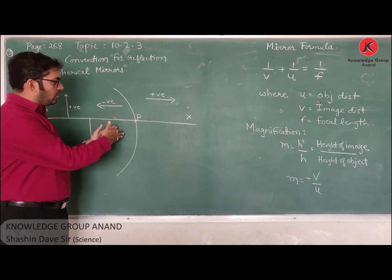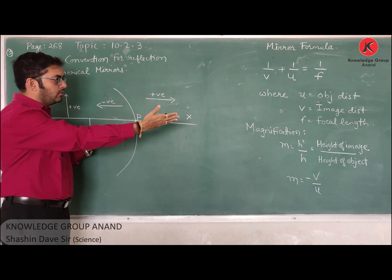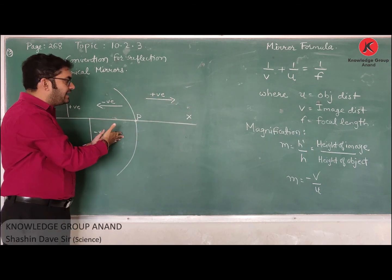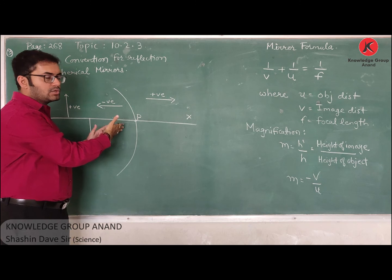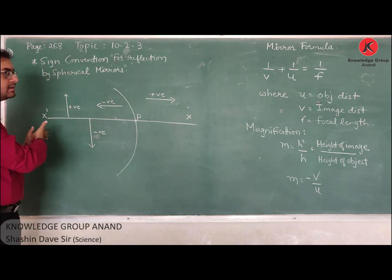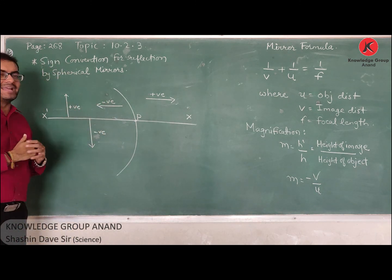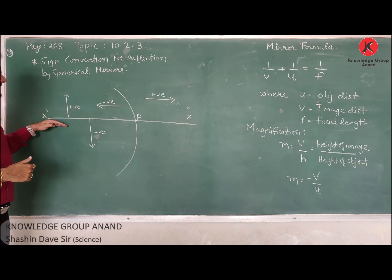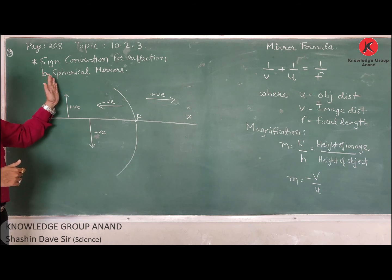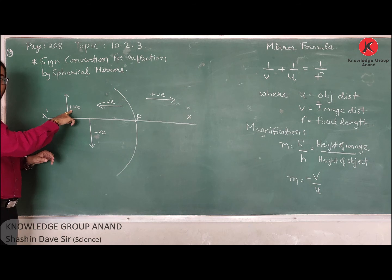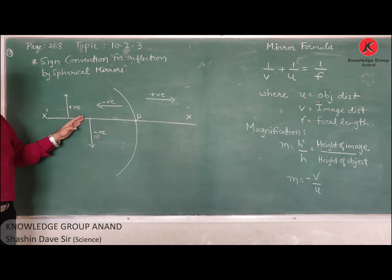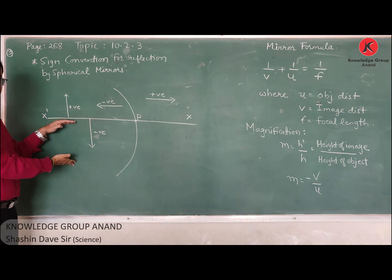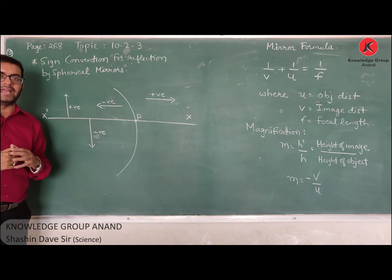All distances on the right-hand side of pole P are considered as positive distances, and all distances on the left-hand side of pole P are considered to be negative. Any height above the principal axis is taken as positive, and any height below the principal axis is considered to be negative.